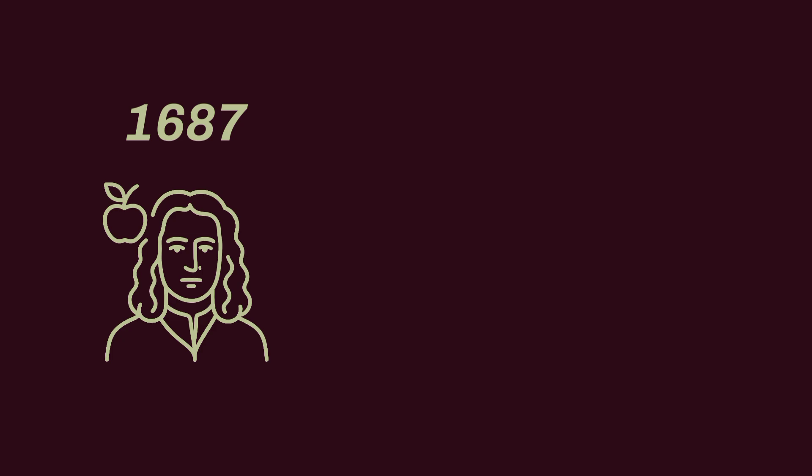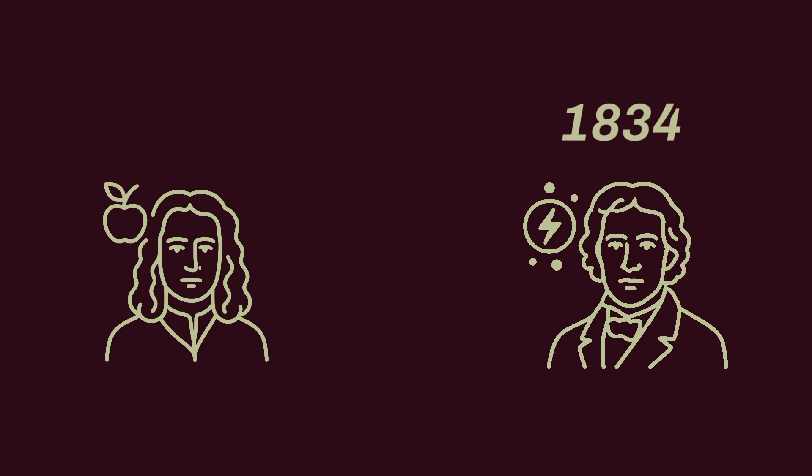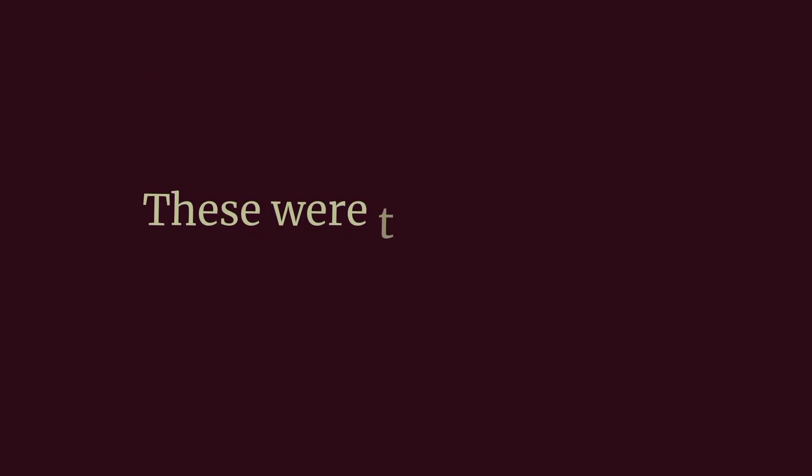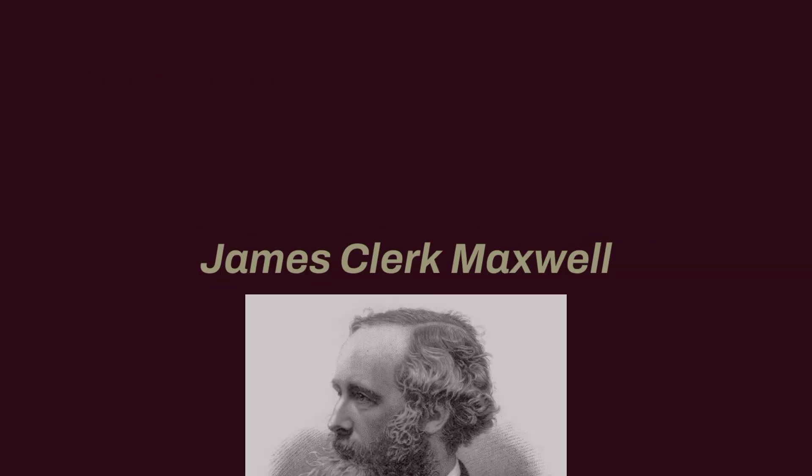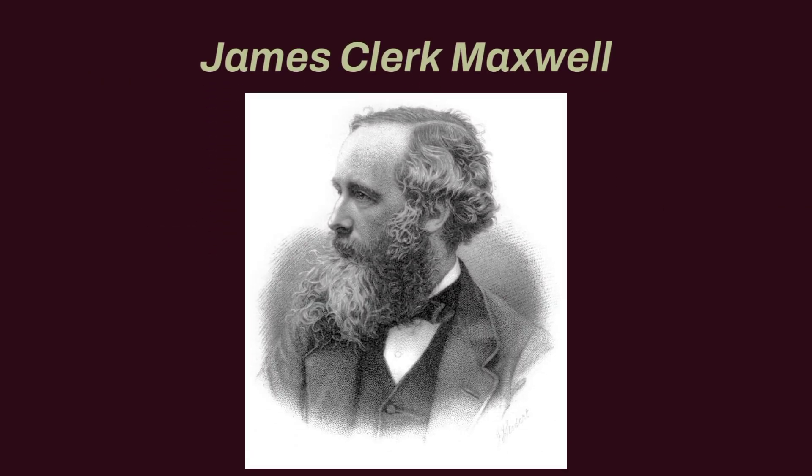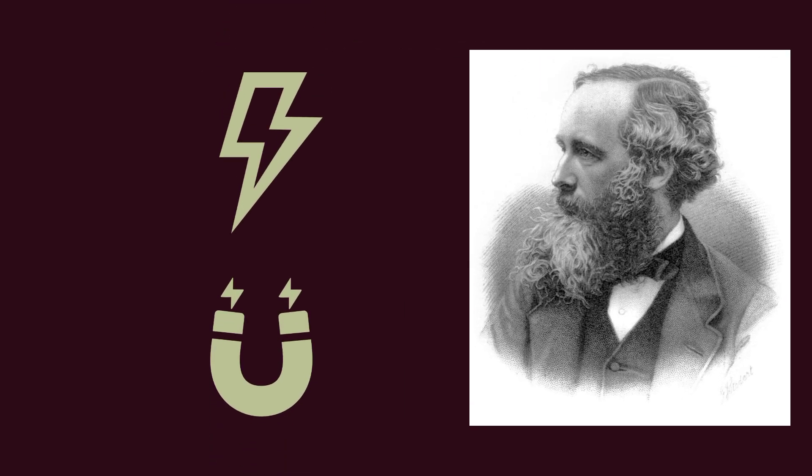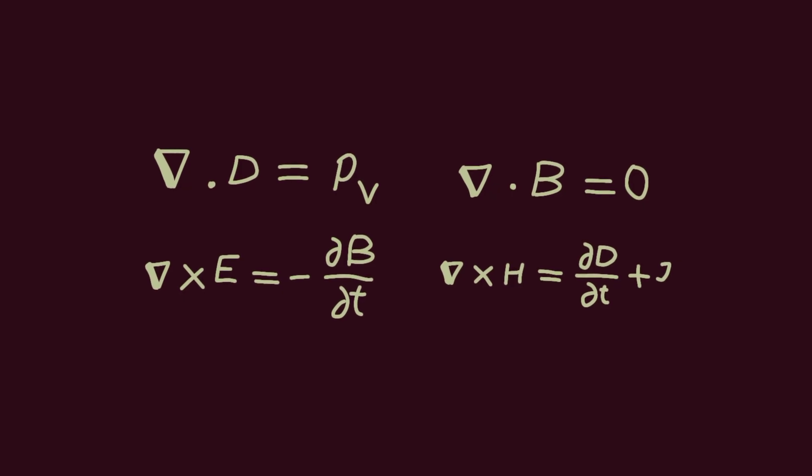While Newton was sitting in the shade of a giant tree, another genius was trying to solve another mystery. Electricity and magnetism. These were two seemingly independent forces. That is, until James Clerk Maxwell arrived. Maxwell understood that these two forces were actually two mischievous children of the same family. He developed a set of formulas, Maxwell's equations, that brought them together.